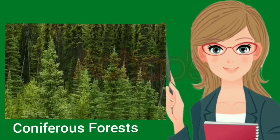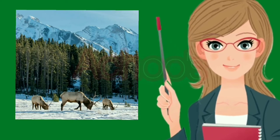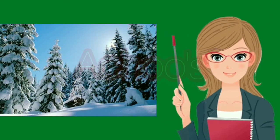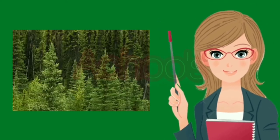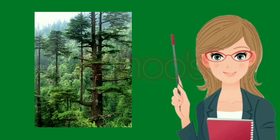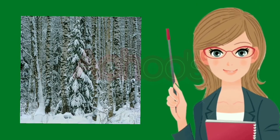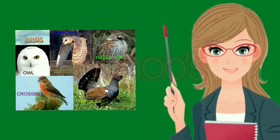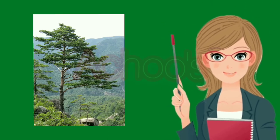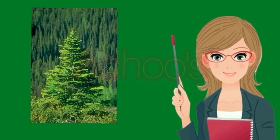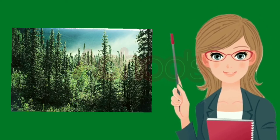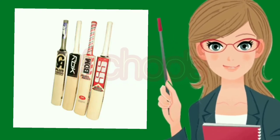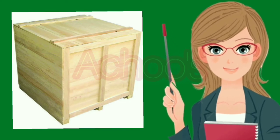The sixth type is the coniferous forest, also known as taiga forest. In winters, temperatures can drop to as low as -50 degrees Celsius, and the region experiences heavy snowfall. Coniferous trees bear cones and have narrow, needle-like leaves which protect them from winter snow; their branches bend downward to allow snow to slide off easily. Summers are comparatively milder. Evergreen trees like pine, fir, cedar, and spruce are common here. Coniferous trees provide softwood used to manufacture pulp for paper and newsprint. Matchsticks, furniture, plywood, sports goods, and packing boxes are other products made from coniferous softwood.